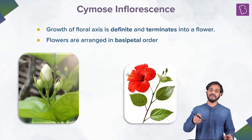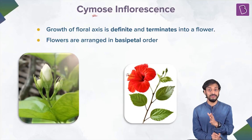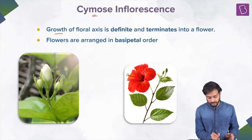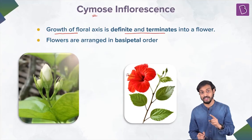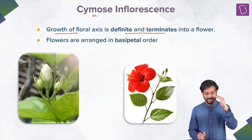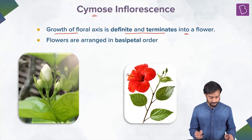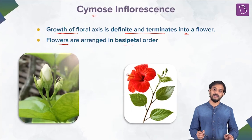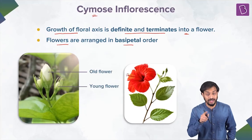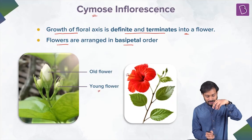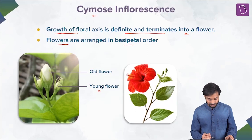Now let's talk about cymose inflorescence. The important difference from racemose is that the growth of the floral axis is definite — it terminates by the formation of a flower. Flowers are arranged in basipetal order, meaning older flowers are at the tip and younger flowers are at the base.